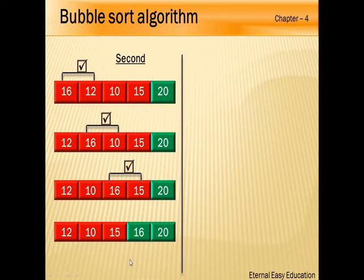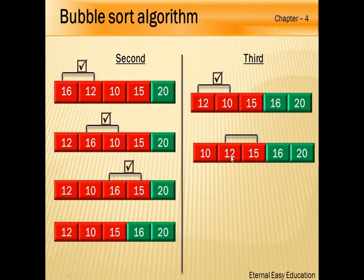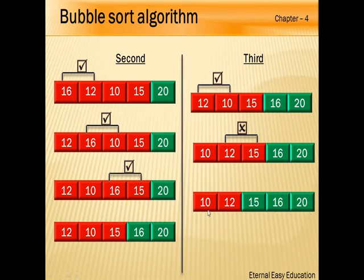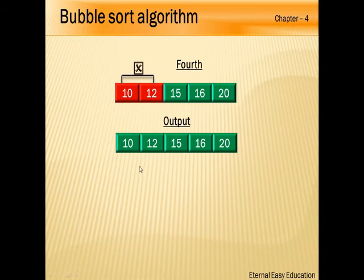Step 3: Compare 12 and 10 — 10 is less, so swap, giving 10 and 12. Compare 12 and 15 — 12 is less than 15, so no swapping. The list is 10, 12, 15, 16, 20. The elements 15, 16, 20 are already sorted. Step 4: Compare index 0 and 1 — 10 and 12. Since 12 is greater, no swapping. Final output: 10, 12, 15, 16, 20.